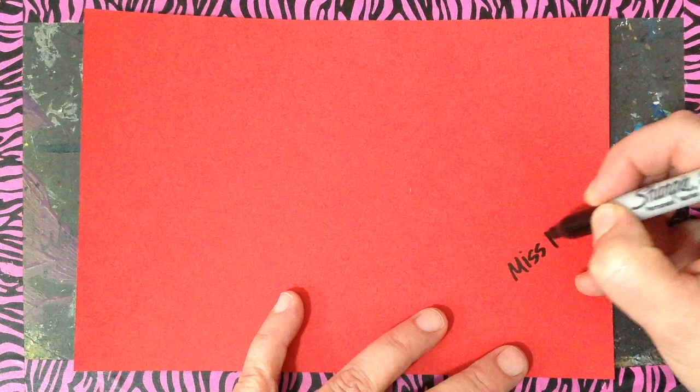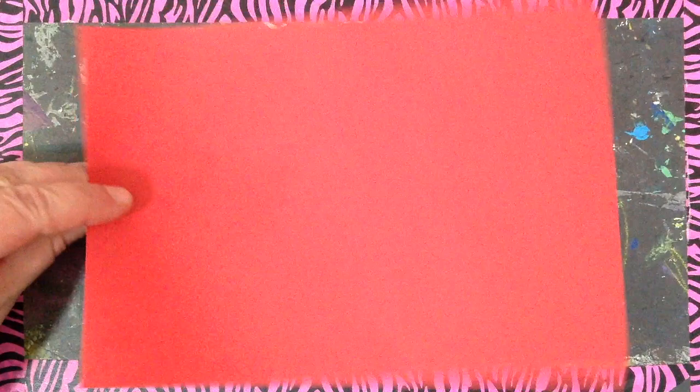You will need a piece of construction paper. We have a variety of colors. I chose red, and on the back you're going to put your name and your class. And flip that over so your front is just one solid color. And you should have your baggie of collage materials from last class. So you're going to take those collage materials out.